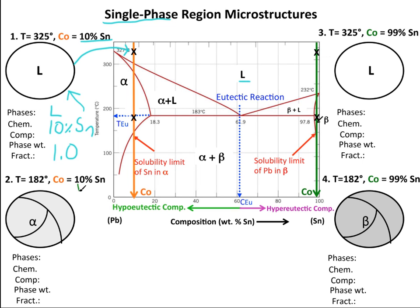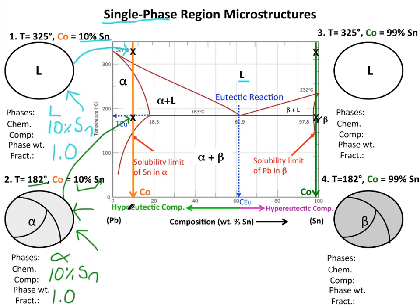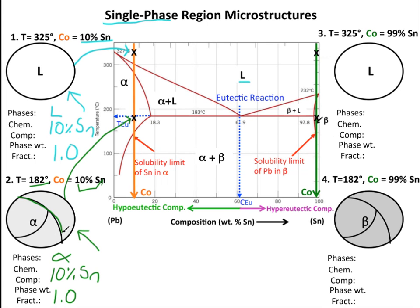Now we are given the same overall composition and a temperature 1 degree below the eutectic temperature, putting us right there on the phase diagram. This means the phase present is alpha. The chemical composition is 10% tin and the phase weight fraction is 1.0. Here is the microstructure of single-phase alpha — it is just polycrystalline alpha, no beta, no liquid. It is important to note that alpha is the lead-rich solid phase. We have some grains, but it is just polycrystalline solid alpha.